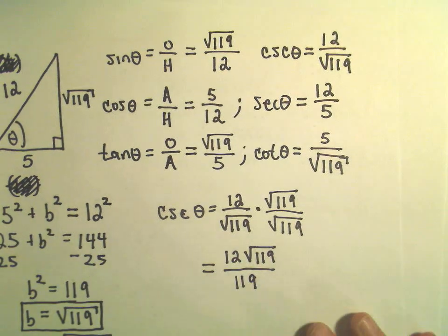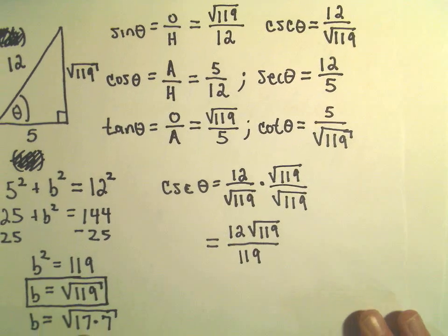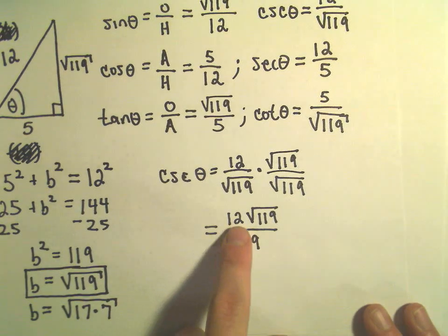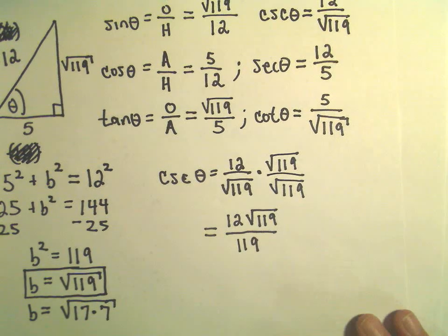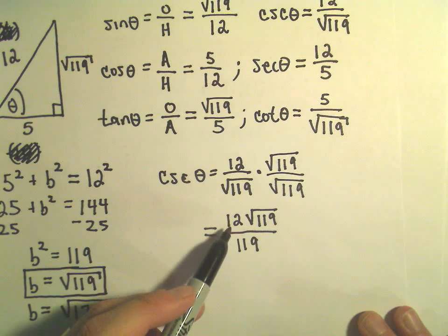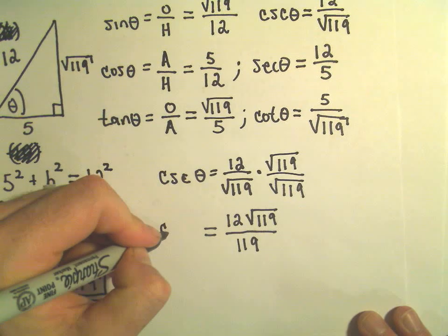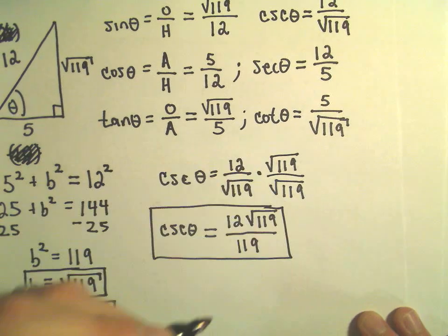And now we could try to reduce, but remember we said factors of 119 were basically 17 and 7. 12, if you factor that, doesn't have any factors of 7 or 17. So 12 over 119 won't reduce. So we could simply say that cosecant of theta, you could rewrite it equivalently like this.